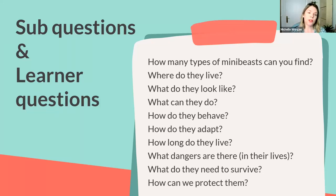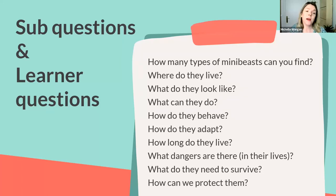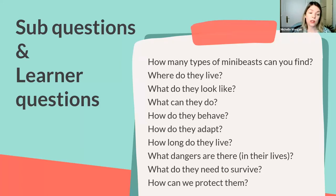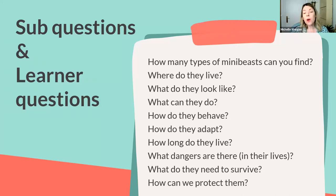With the essential question 'How do minibeasts survive?' I've come up with sub-questions that go from quite simple, specific questions — like identifying different minibeasts — to thinking about different aspects of their lives: habitats, appearance, behaviour. Then they move on to more complex questions such as what dangers there are, what they need to survive, and how we can protect them. I can choose questions according to students' linguistic and cognitive level, or have students choose which questions they want to explore.